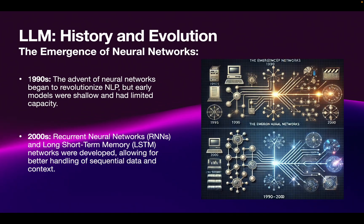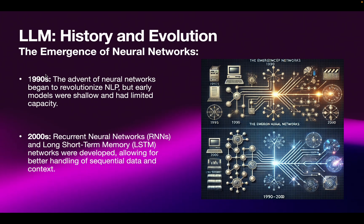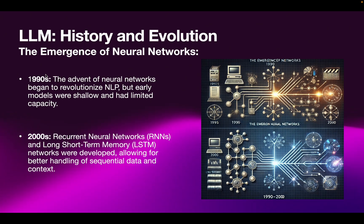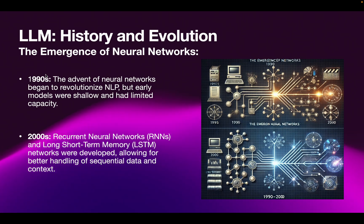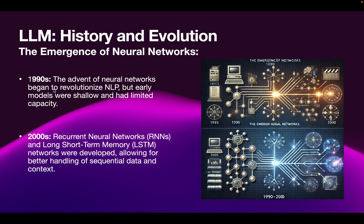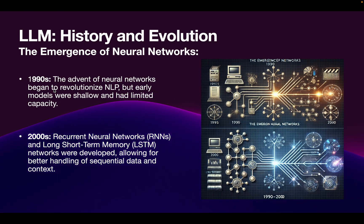Next came the emergence of neural networks. Neural network research actually started in the 1990s, but there was no GPU or sufficient CPU power to implement them. Models existed in computer vision and NLP research, but couldn't be run practically. It was only with the rise of NVIDIA GPU computing that implementation became feasible. In the 1990s, early neural networks began with limited capacity cells to explore how this approach might work.